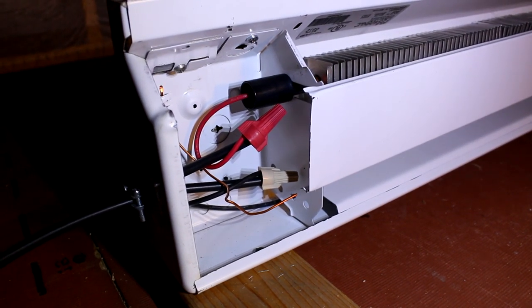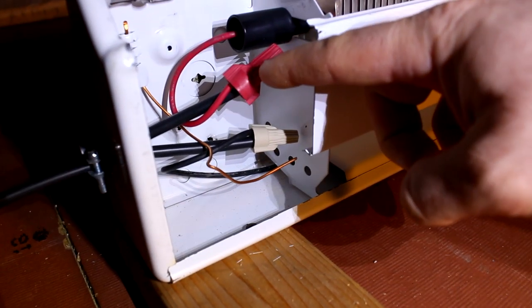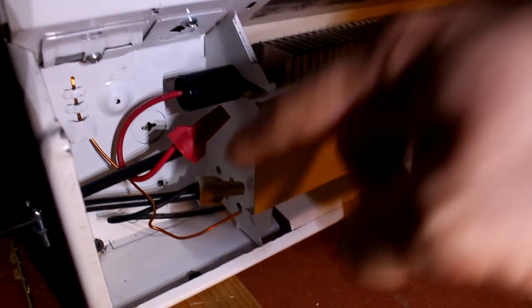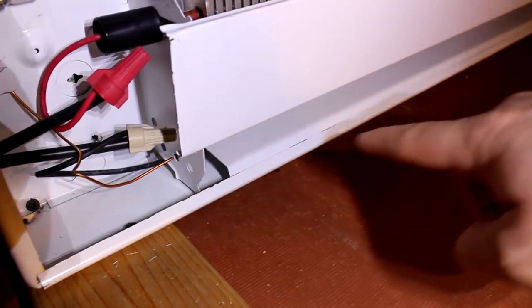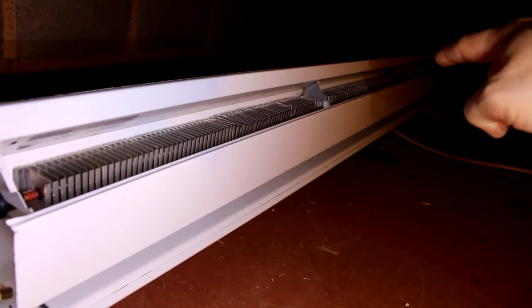The positive wire from the solar panel is coming in right here going to this side of the resistor. The negative is jumping to the black wire which runs along the bottom before it loops back in on the other side.